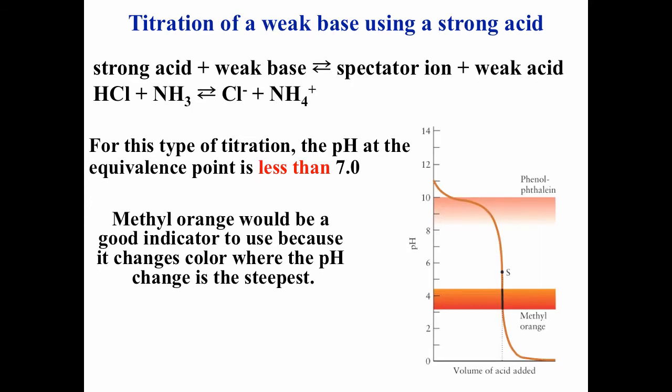For the titration of a weak base with a strong acid, say HCl and ammonia, the equilibrium constant is very large, so at the equivalence point you can consider the reaction goes to completion. You're left with the chloride ion and the ammonium ion. The ammonium ion is the conjugate acid of a weak base, so it's going to be slightly acidic. Looking at the graph, the equivalence point S is actually lower than 7, so the pH is acidic. Methyl orange changes color fairly close to this equivalence point, making it a good indicator for this titration.